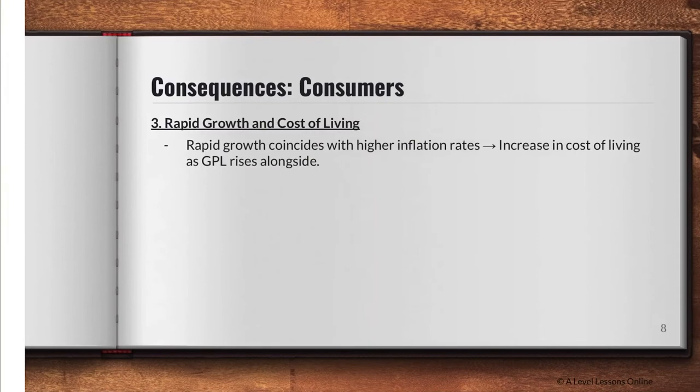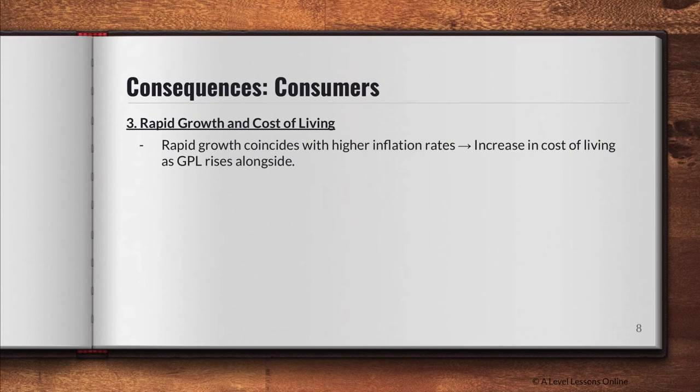On the other hand, if there is rapid growth, there can be an increase in the cost of living. Rapid growth usually coincides with higher inflation rates, occurring along the curve at full employment. There could be a small rise in real GDP but a greater rise in the general price level, and when the GPL increases, it causes an increase in the cost of living.